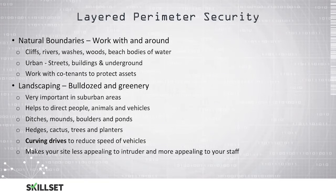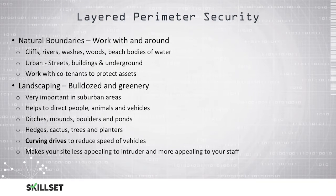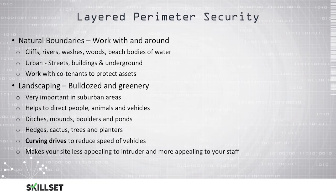Landscaping can help to direct people, animals, and vehicles into or away from your facility as necessary. You can use ditches, mounds, boulders, and ponds to keep vehicles from driving toward the facility. You can use hedges, cactuses, trees, and planters to keep animals or vehicles off the property. You can use curving driveways to reduce the speed of vehicles as they approach, making it more difficult for vehicles to ram the building. And if you make your site less appealing to an intruder, you're also making it more appealing to your staff.